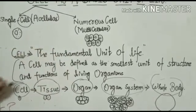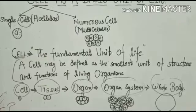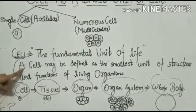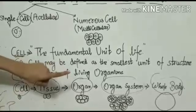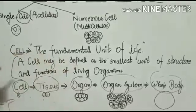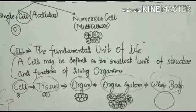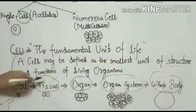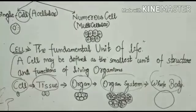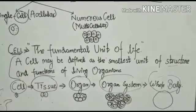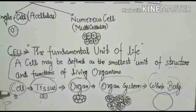There is a basic definition of a cell. You can copy it. A cell may be defined as the smallest unit of structure and function of living organism. Here, a word comes from structure and function. What does this mean?